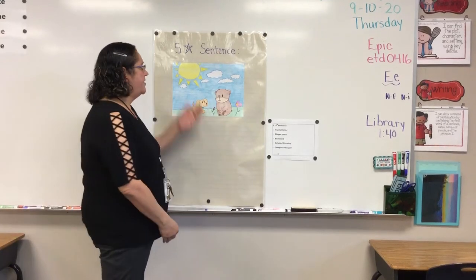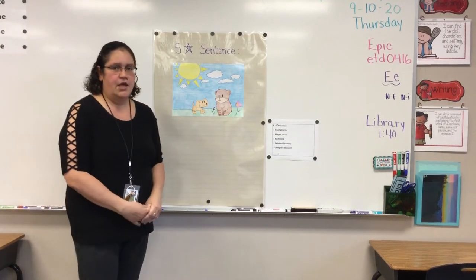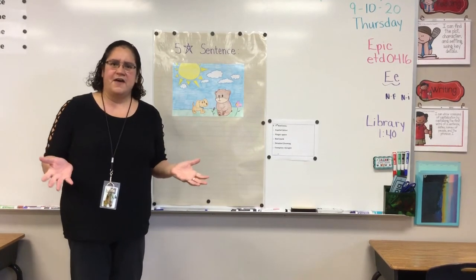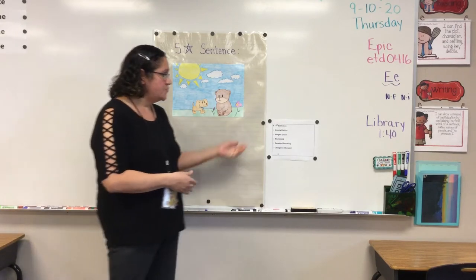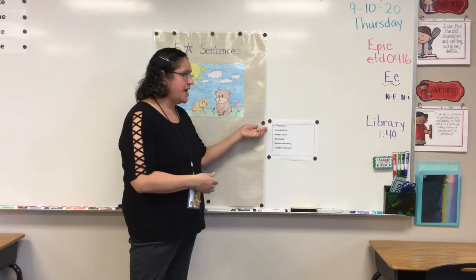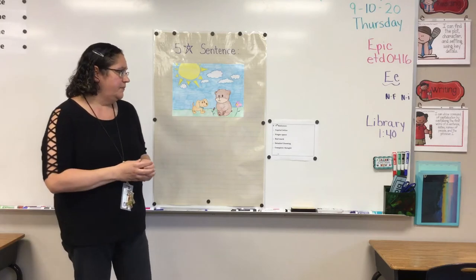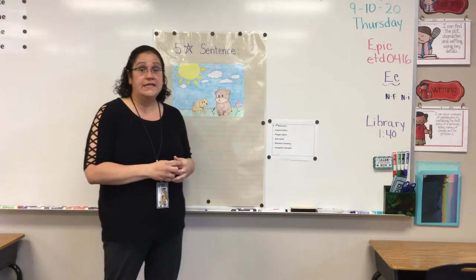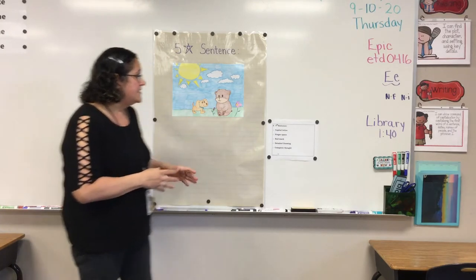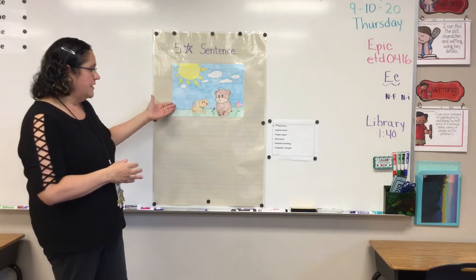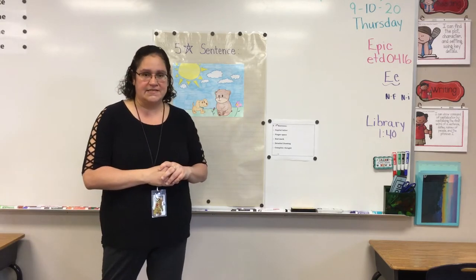We are going to learn about a five-star sentence. What is a five-star sentence? A five-star sentence is one that starts with a capital letter, has finger spacing, has an end mark at the end of the sentence, has a detailed drawing, and is a complete sentence.